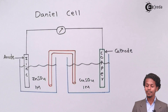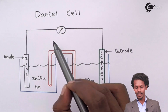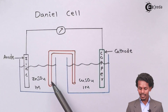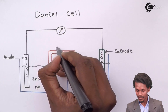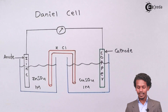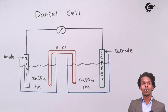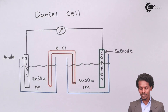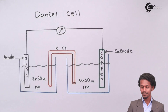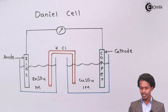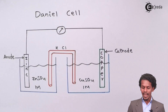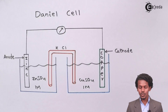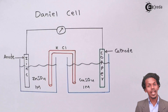To connect the two half cells electrically, a galvanometer or a device that measures the amount of electricity produced is used. They are also connected by a salt bridge, which consists of K⁺ ions and Cl⁻ ions. This device is based on the principle of the galvanic cell, where a chemical reaction occurs and electricity is produced. The KCl salt bridge acts as a connector between the two half cells, connecting them electrically and avoiding liquid junction potential.